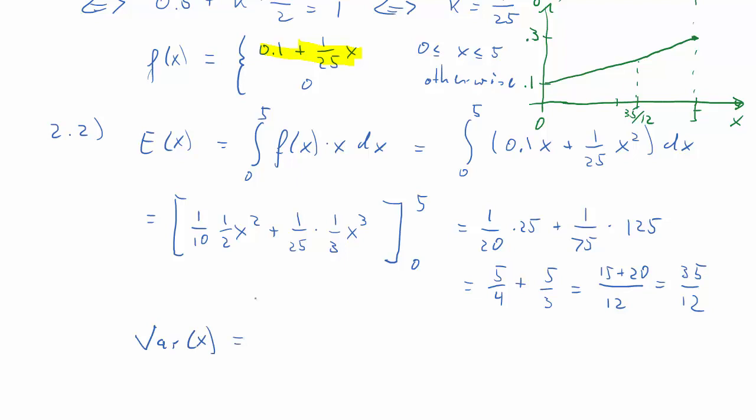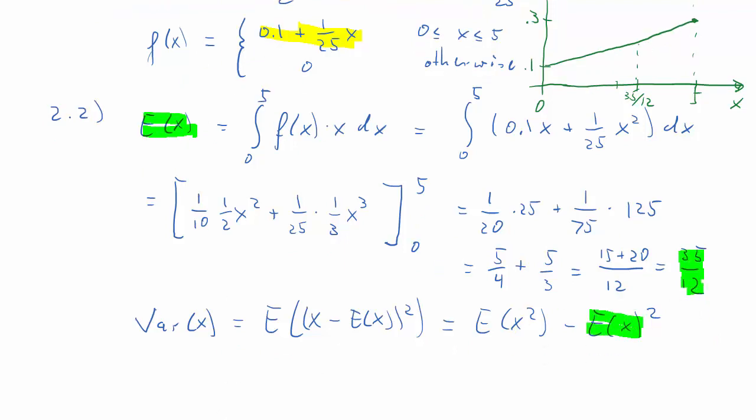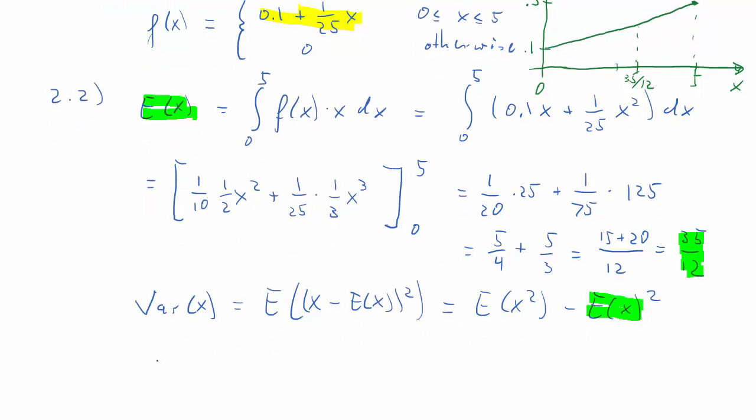What about the variance of X? That is formally the expected value of (X - E(X))^2. Or, alternatively, the expected value of X squared minus the expected value of X squared. So that's the nicer form, because we've calculated part of that already, that E(X), that's 35 over 12. So we'll use that later.